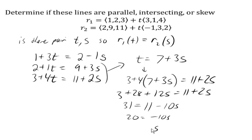And when s is negative 2, going back to our substitution here, t will be 7 plus 3 times negative 2. So 7 minus 6 is 1.